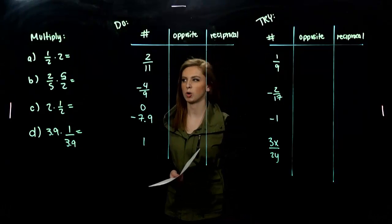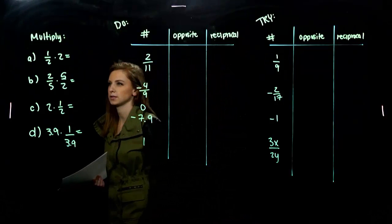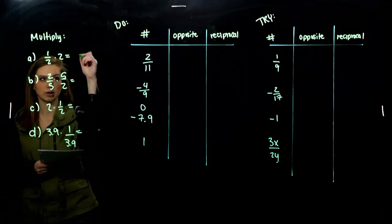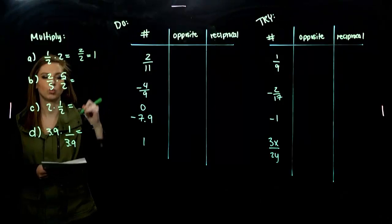So let's look at these first few examples of multiplication. Moving on in this section. When I have 1 half times 2, I'm looking at 2 divided by 2, which is 1.